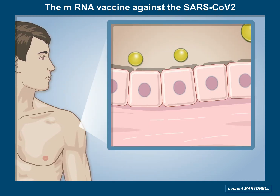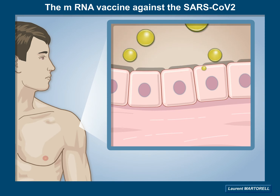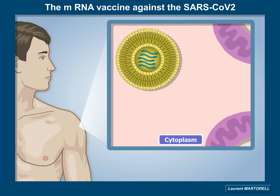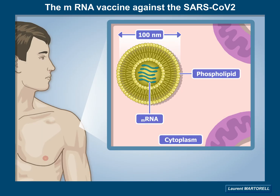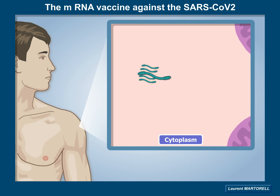The lipid nanoparticles containing the mRNAs fuse with the plasma membrane. About the size of 100 nanometers, each nanoparticle is composed of a phospholipid bilayer. Inside the cytoplasm, the internalized mRNAs are released.